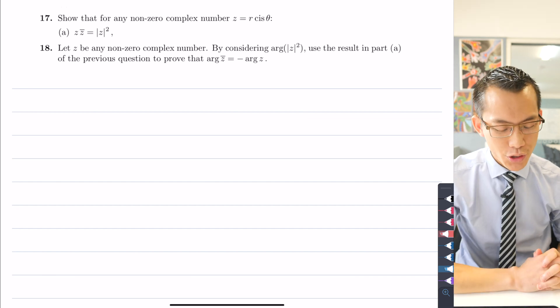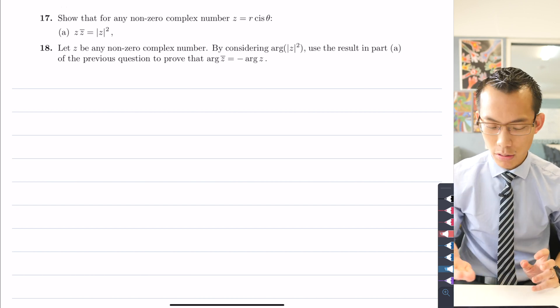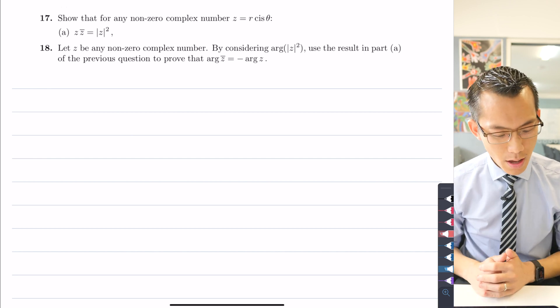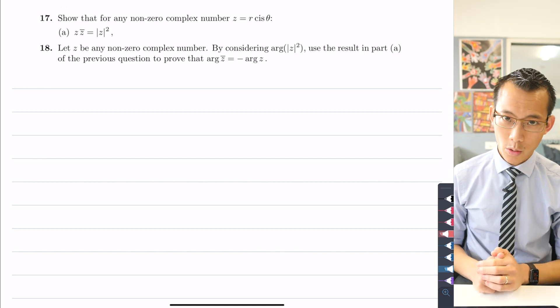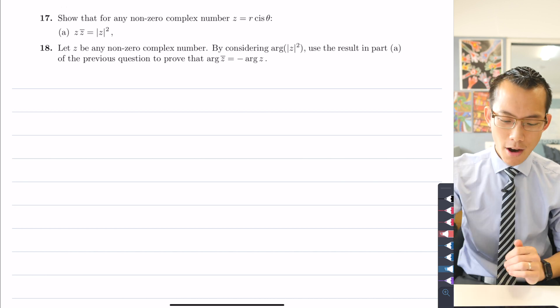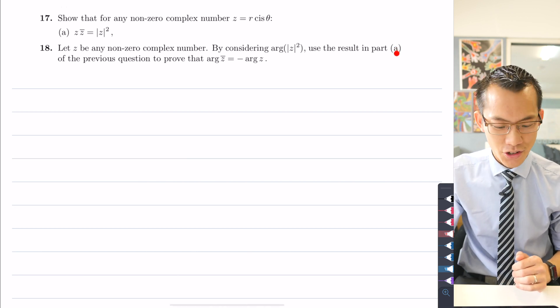You can see we've got 17 and 18 together because they form one coherent whole. Question 17 says, show that for any non-zero complex number z written in polar form, that part a, z times its conjugate equals the modulus of z all squared. I'm only going to focus on part a because that's the part that gets referred to in the next question.